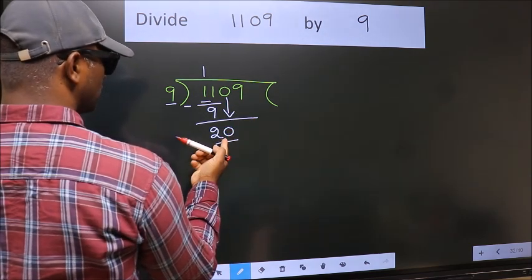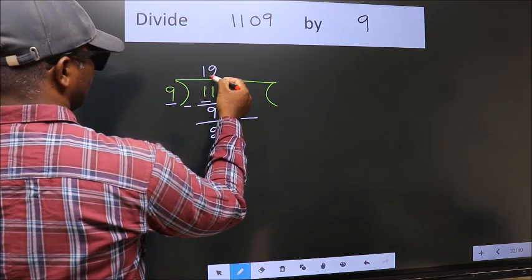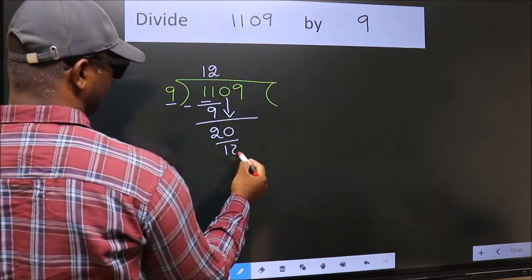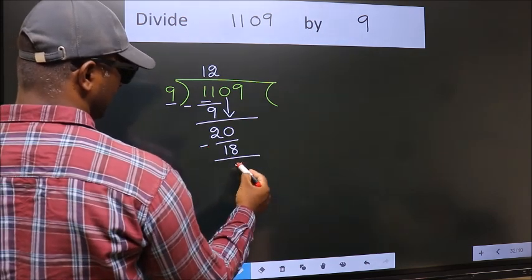A number close to 20 in the 9 table is 9 2s, which is 18. Now we subtract and get 2.